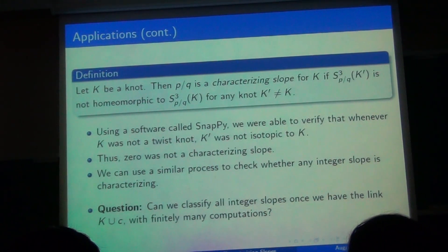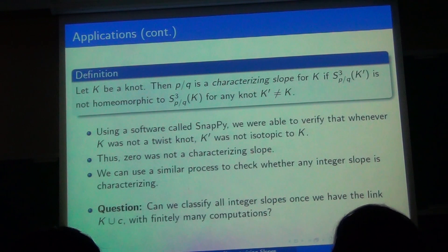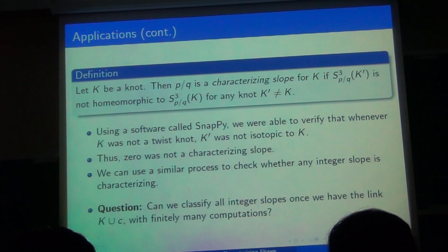Now introduce the concept of a characterizing slope. So recall that surgery on a knot is defined by the slope. A characterizing slope is p over q if for a knot K and a knot K prime, p over q surgery on K prime is diffeomorphic to p over q surgery on K only when K prime is isotopic to K. So what happens is that we have found that for our knots, whenever K prime was not isotopic to K, they still had the same zero surgery. That means zero was not a characterizing slope. Because for characterizing slopes, the knots have to be the same to give the same surgery. That's what it means.